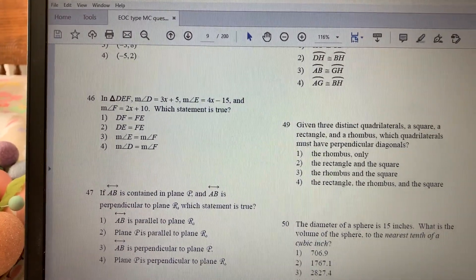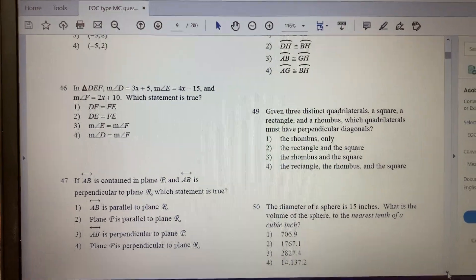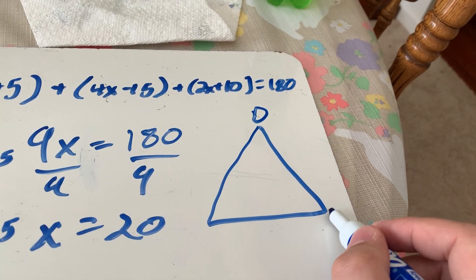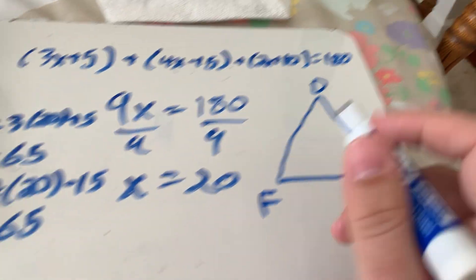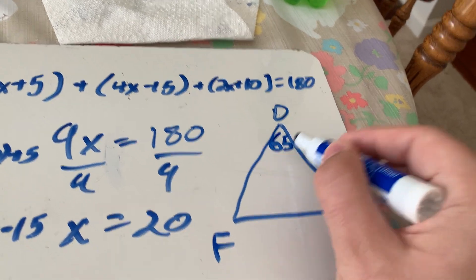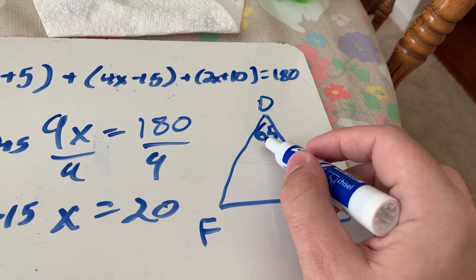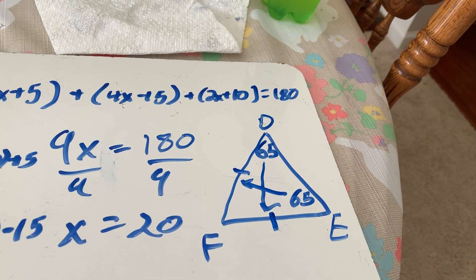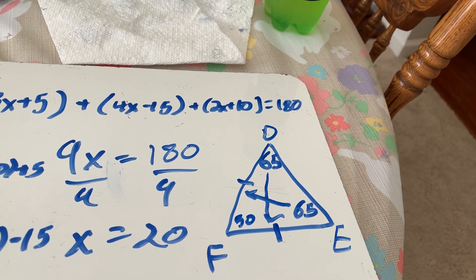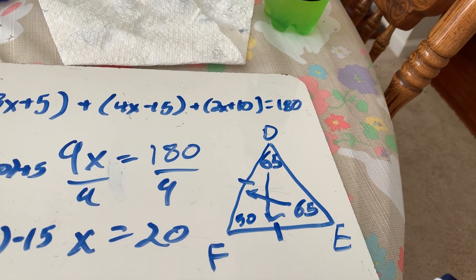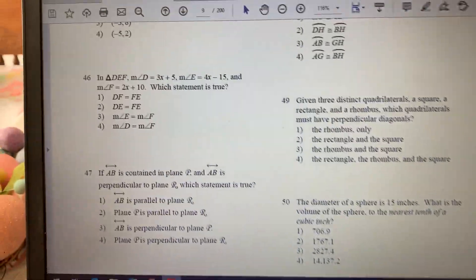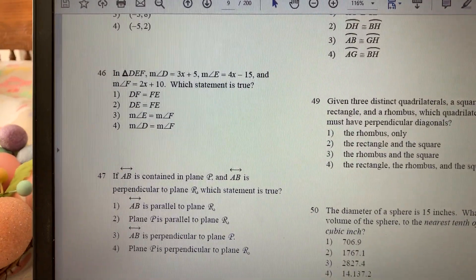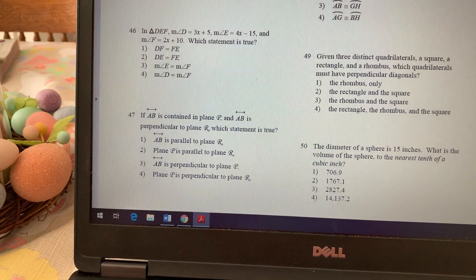We actually need to draw out the triangle to identify which sides. I'll put D at the top, E and F at the bottom. Since angles D and E are both 65°, the sides opposite them — DF and EF — have to be the two congruent ones. So DF is congruent to EF. The answer is: DF equals FE, which is answer choice 1.